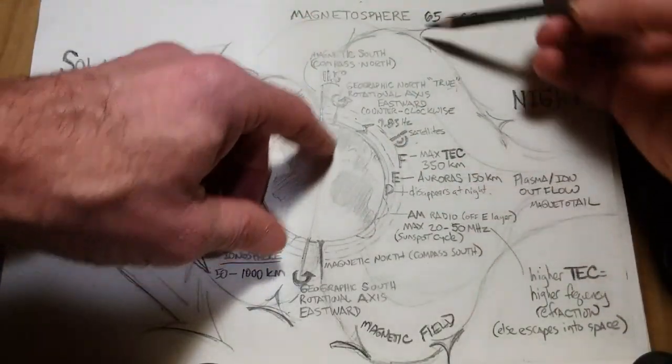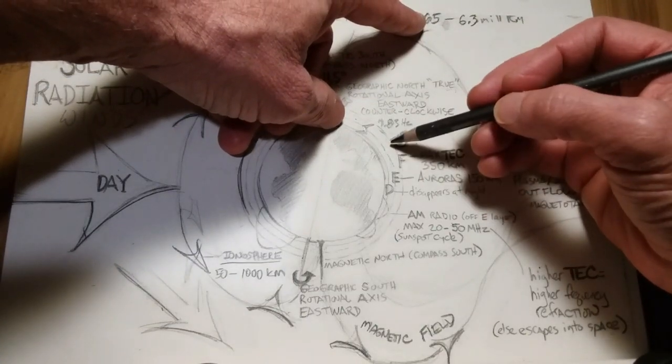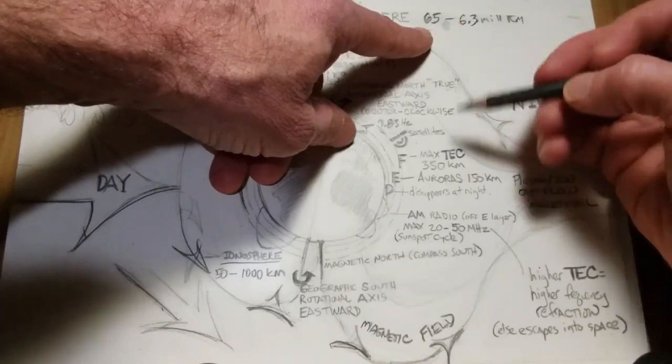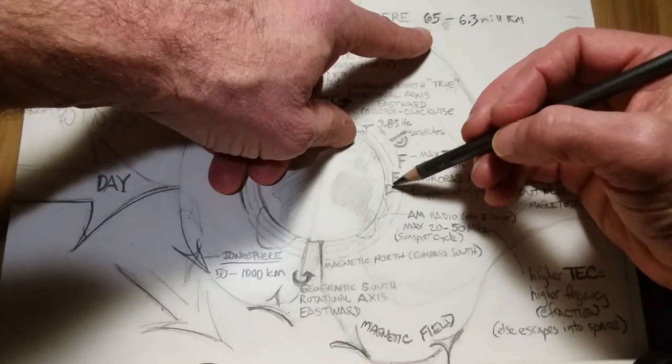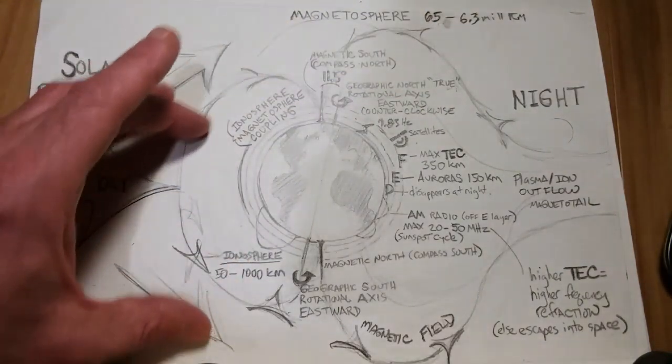Now, the magnetosphere and the ionosphere, you can see, actually would overlap at about the, well, actually, the magnetosphere goes down to 65 kilometers, so that would even be around the D layer, even, that that influence, and that's that coupling.